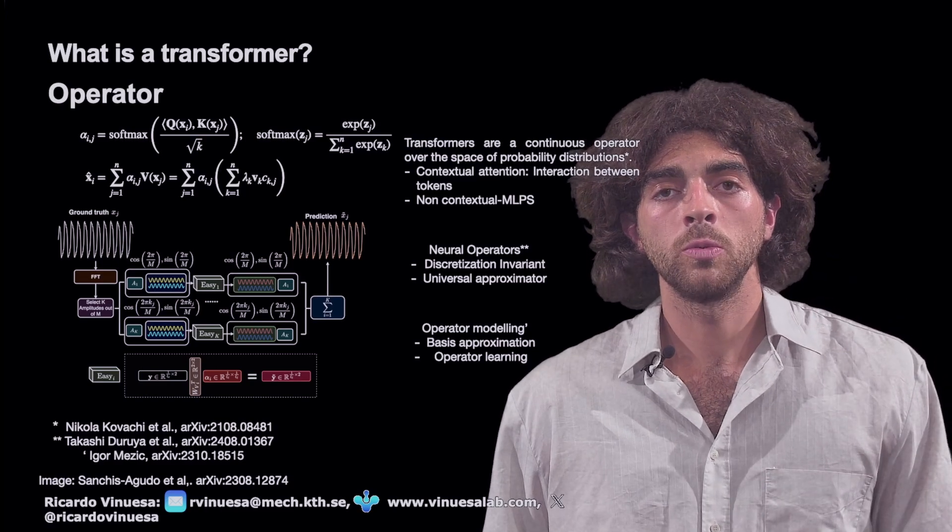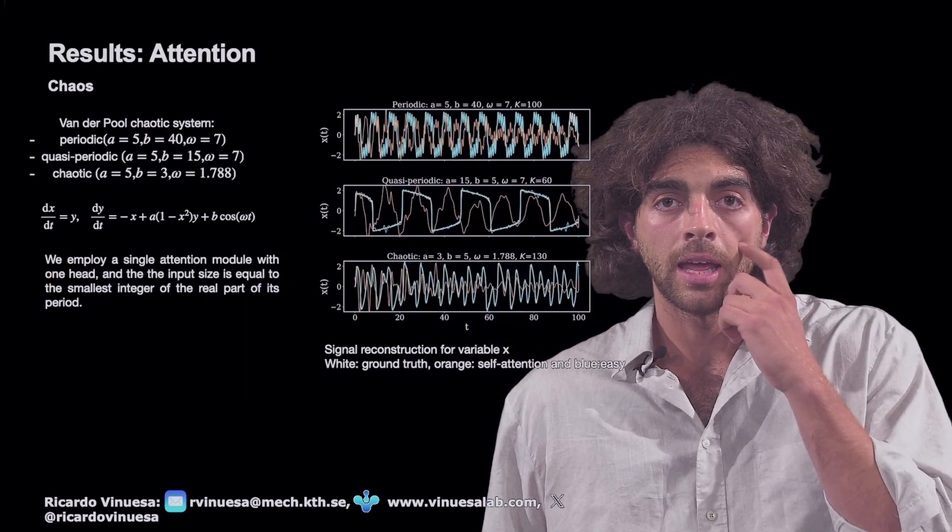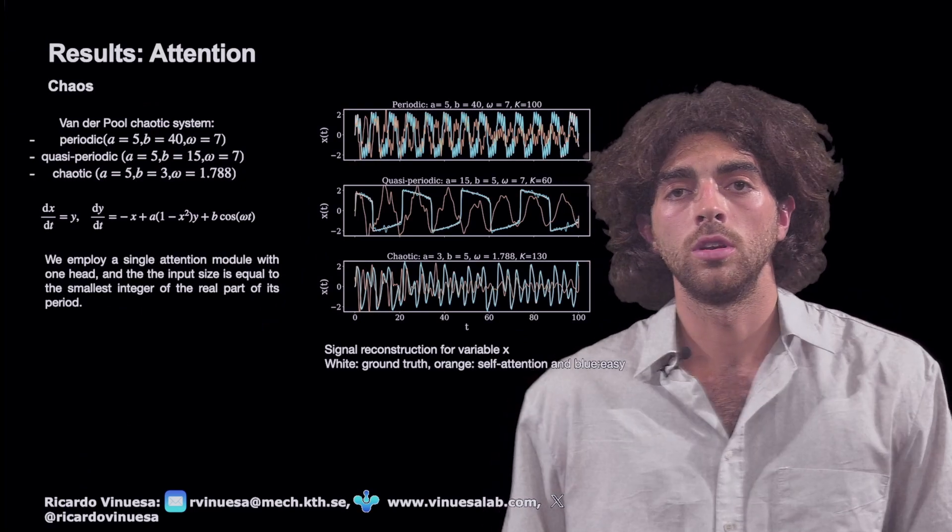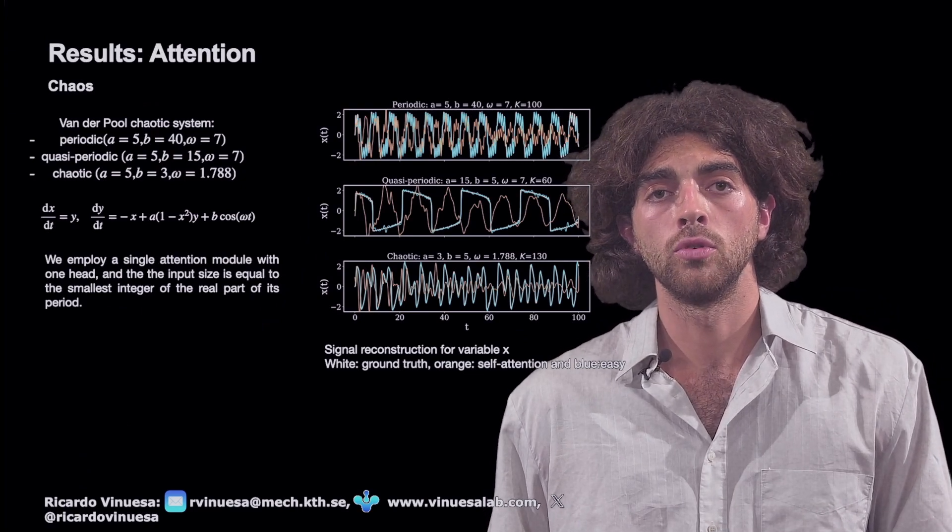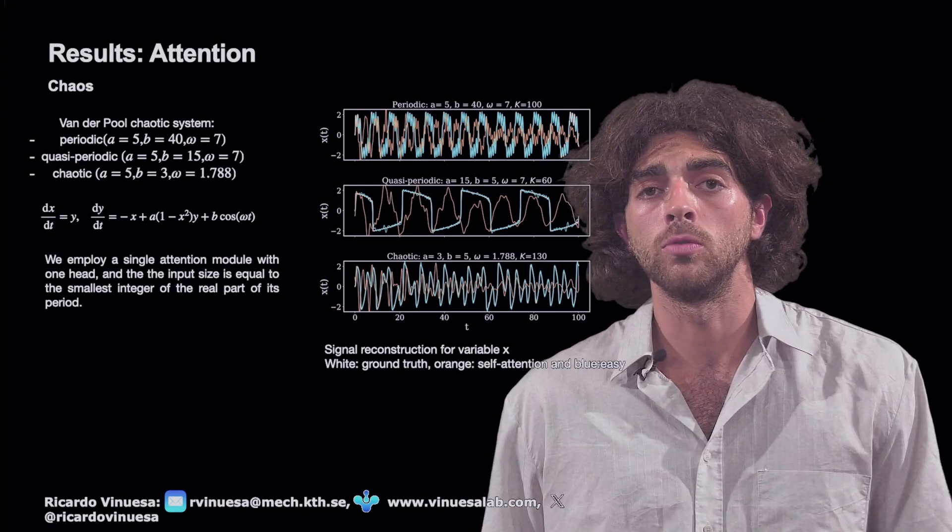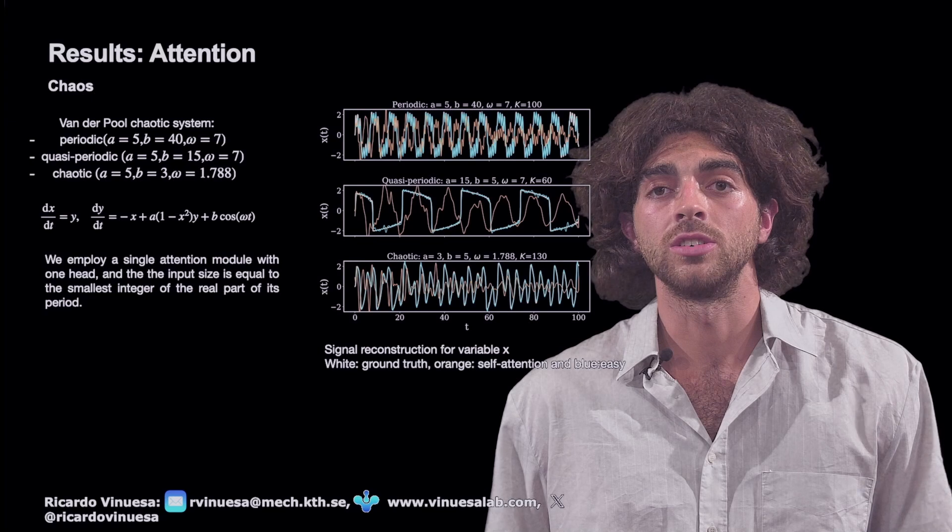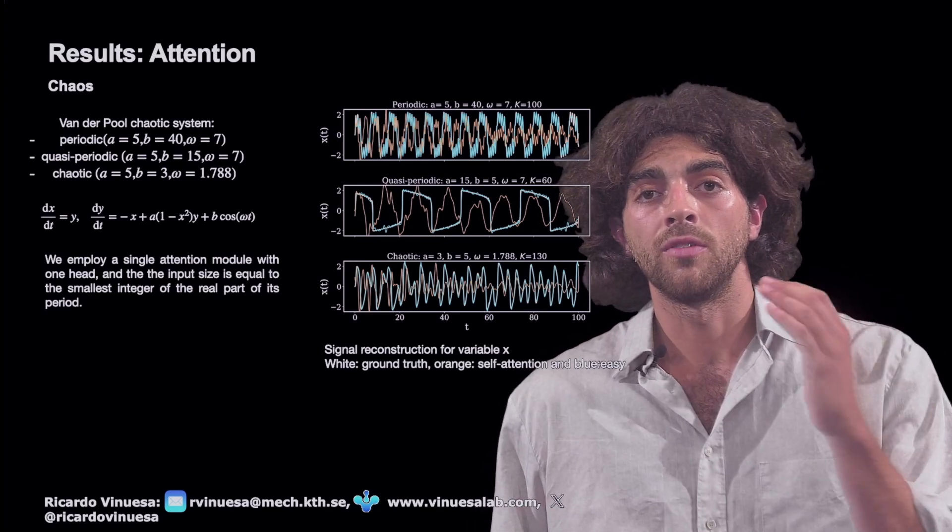As mentioned, first we will try to learn the Fourier modes. The chosen system is a Van der Pol system, the Van der Pol chaotic system. It can transition from different regimes, from quasi-periodic to chaotic to periodic, depending on the parametrization of the differential equation. In this particular case, we do a study of the three different regimes.